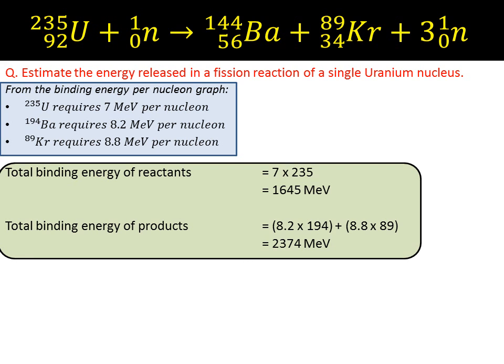What we notice straight away is there's a difference. We appear to be getting much more energy out than we put in. Therefore the difference between those is 729 megaelectron volts and that's released during one of those single fission reactions.